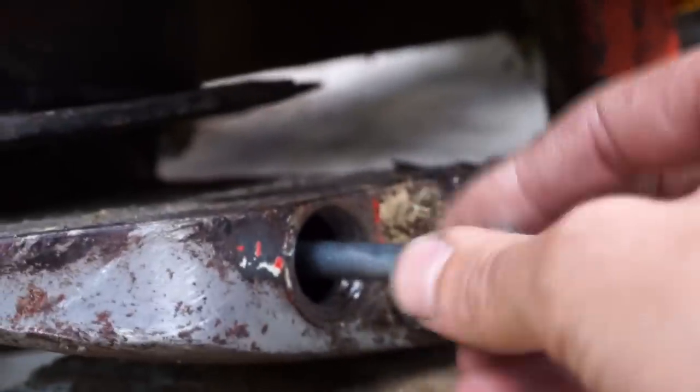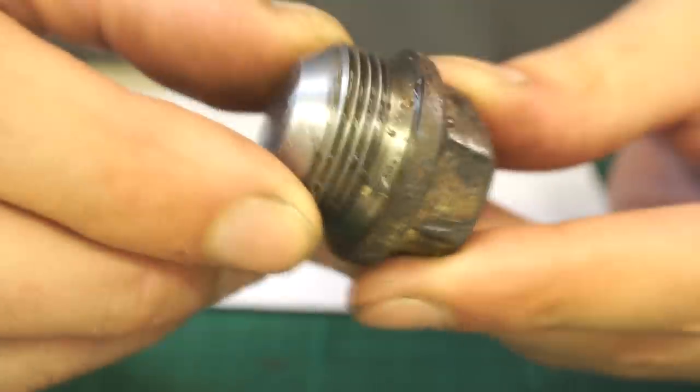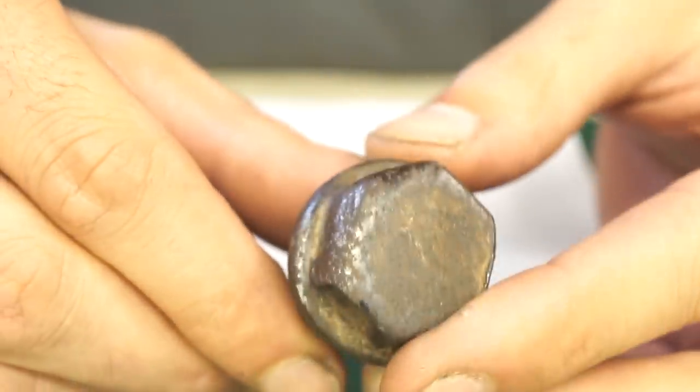That screw is really important because it holds the main axis in its place and seals the oil into the mower. My screw was lost, so a friend with the same mower lent me his screw as a model to make a new one.